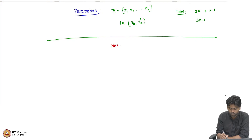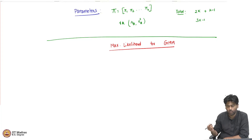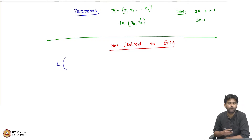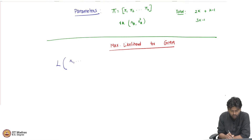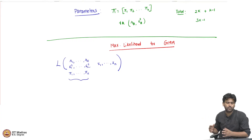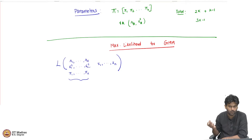We are going to try maximum likelihood for the Gaussian mixture model, which is called GMMs. The likelihood function L is a function of mu 1 to mu k, sigma 1 squared to sigma k squared, and pi 1 to pi k — all of which we do not know — along with the data x 1 to x n, which we have observed. We treat it as a function of the parameters; the data acts as a constant, and we maximize only with respect to the parameters.